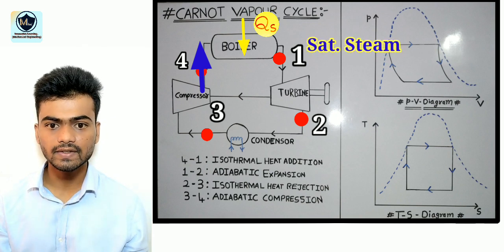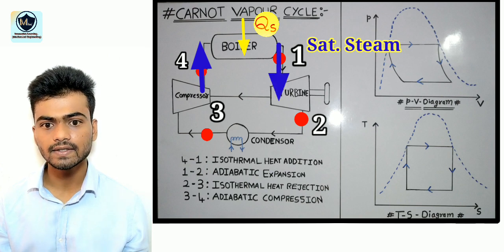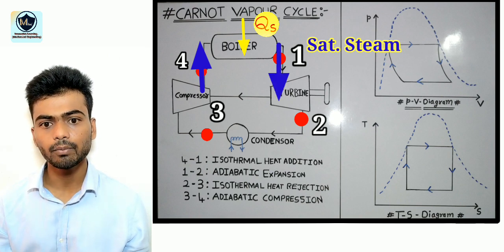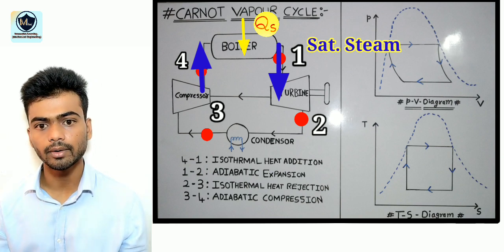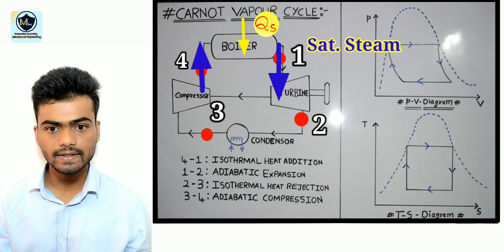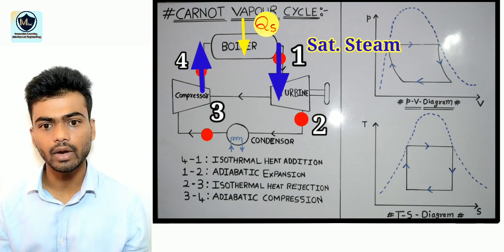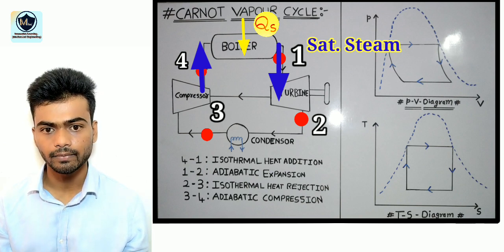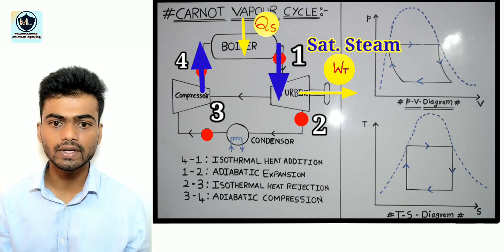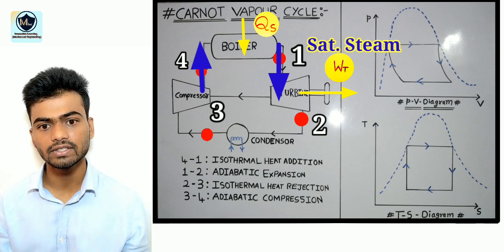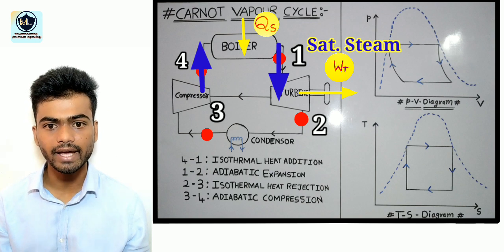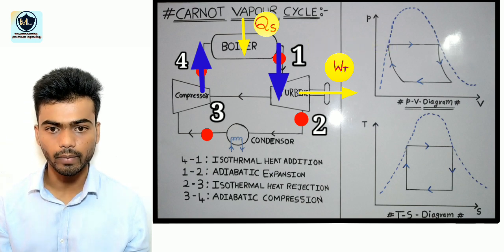The saturated steam generated in the boiler enters the steam turbine with high pressure and temperature and rotates the blades of the turbine. The turbine is coupled with an auxiliary equipment such as generator. Here work produced in the turbine is transformed into electrical energy or some other form of energy by an auxiliary equipment.